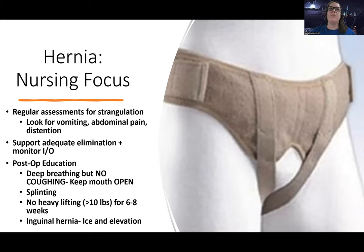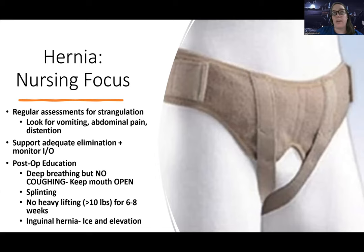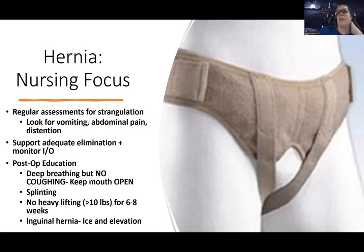If it's an inguinal hernia, there can be a lot of scrotal swelling — it can be very uncomfortable. What we want to do is apply ice and elevate. You might be wondering how to elevate a scrotum — there are devices like a scrotal support device shown in the picture. We can also use what we call 'fluffing the scrotum,' where we put a bunch of towels or pillowcases underneath it just to lift it up a bit. It doesn't need to be above heart level, just up higher than where it is. That can bring a lot of relief.